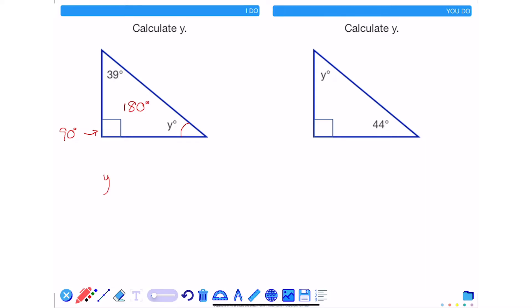So knowing that y plus 90 plus 39 is equal to 180, I've now created an equation that I can solve. 90 plus 39 is 129. Subtracting 129 from 180 leaves me 51 degrees and this is my value of y.